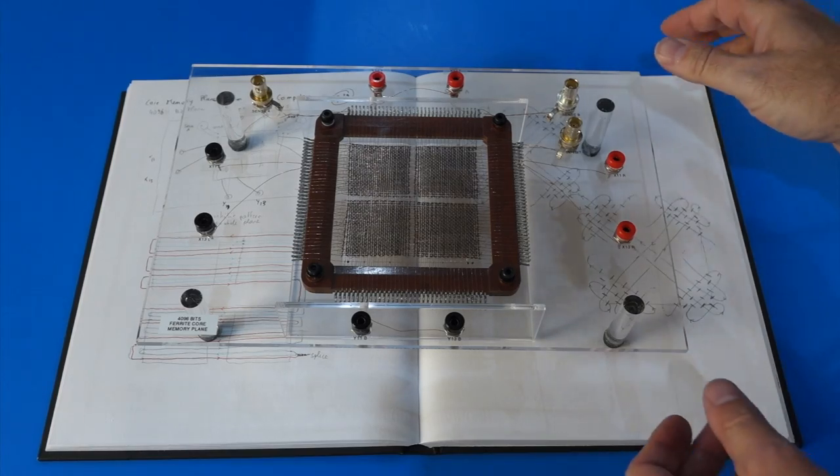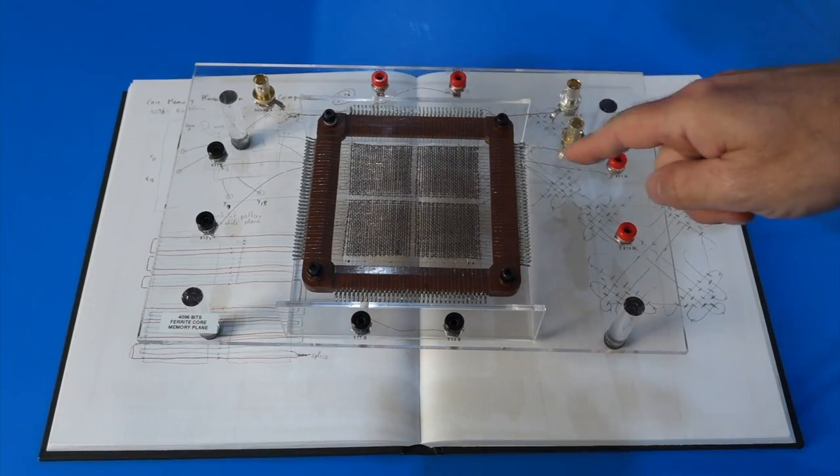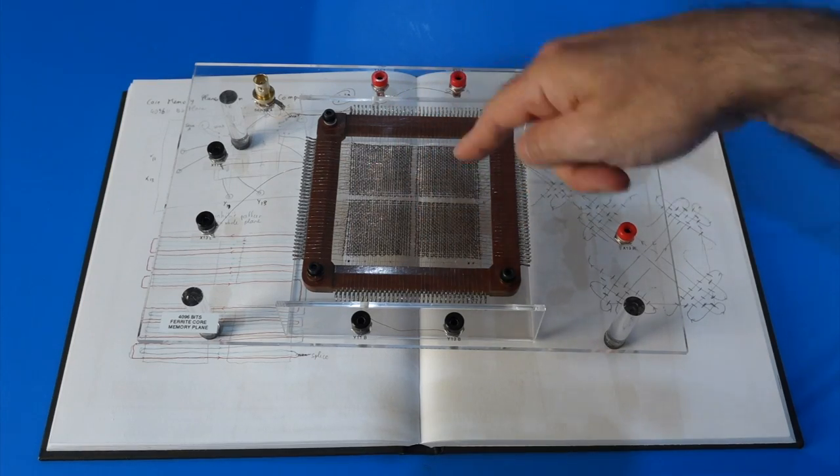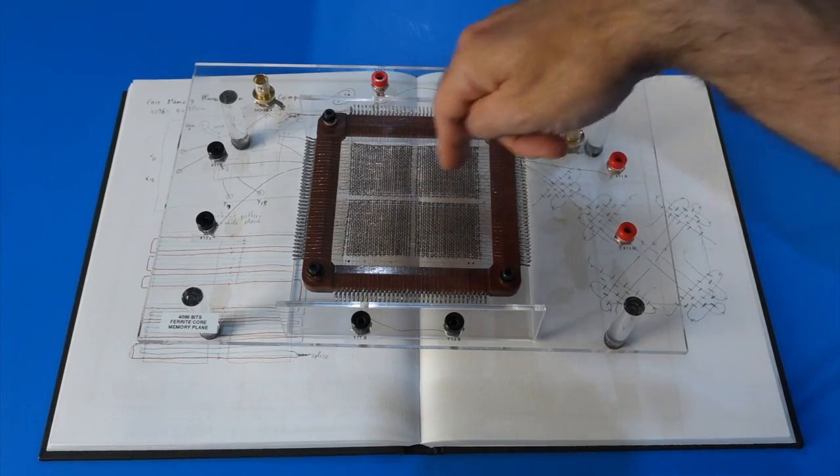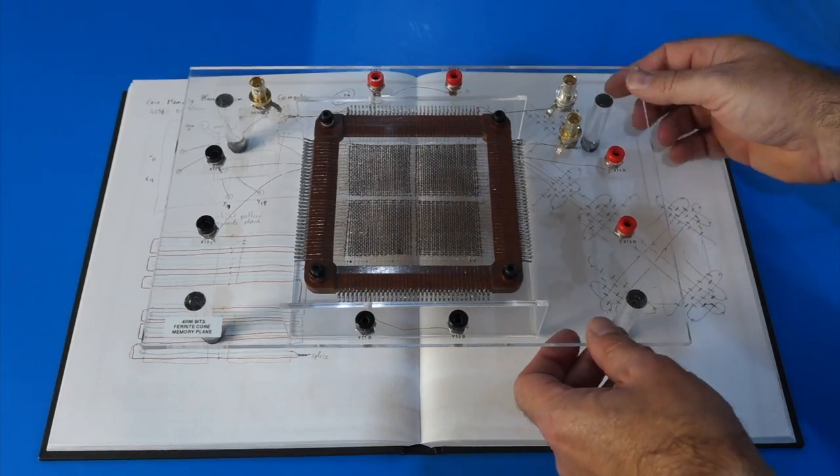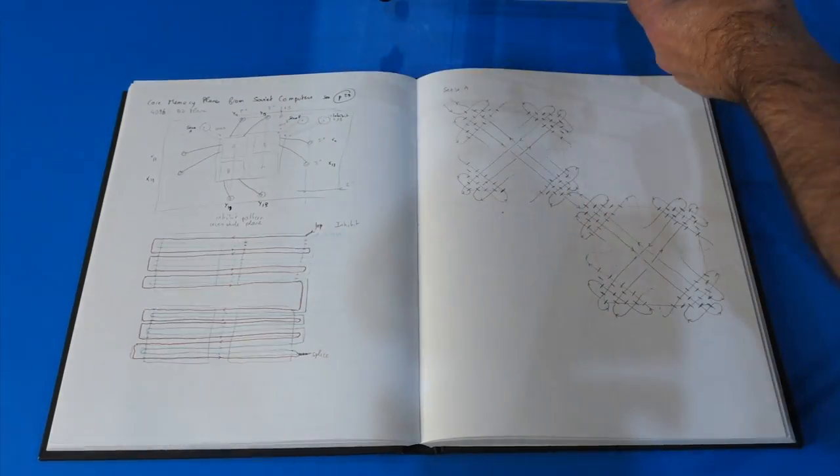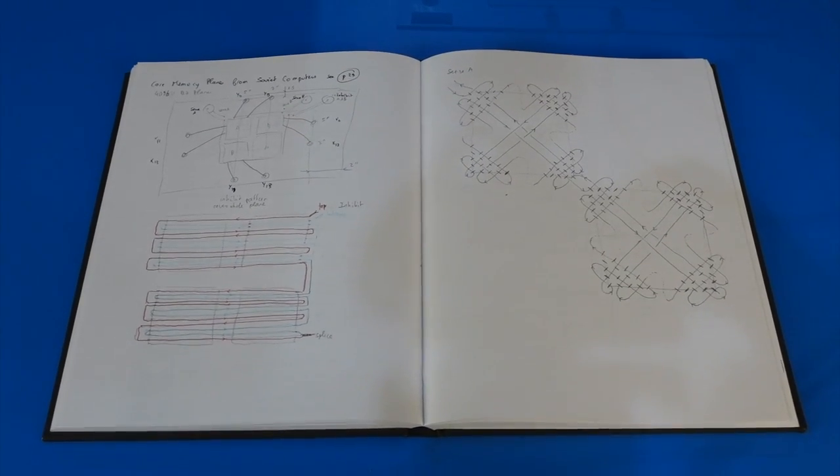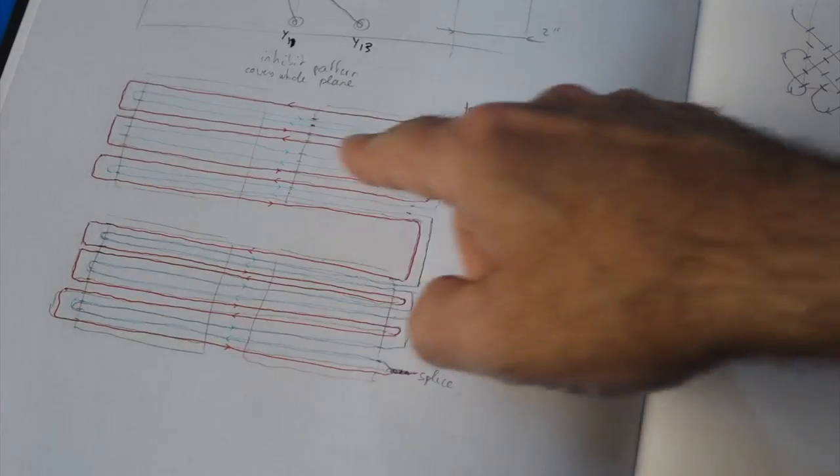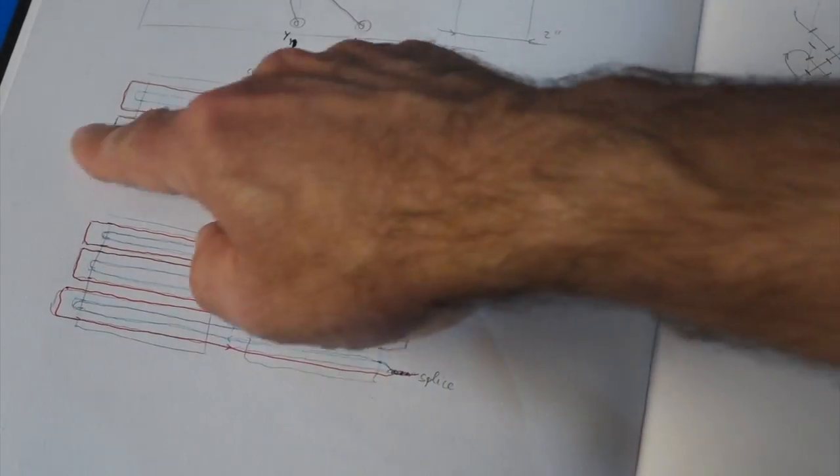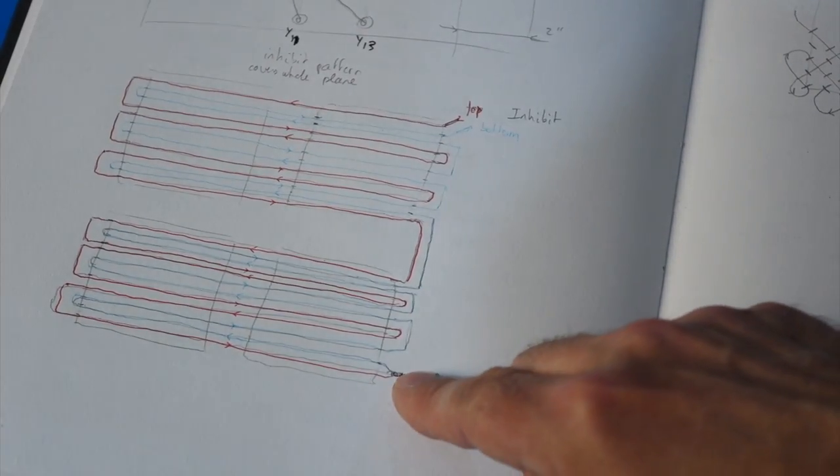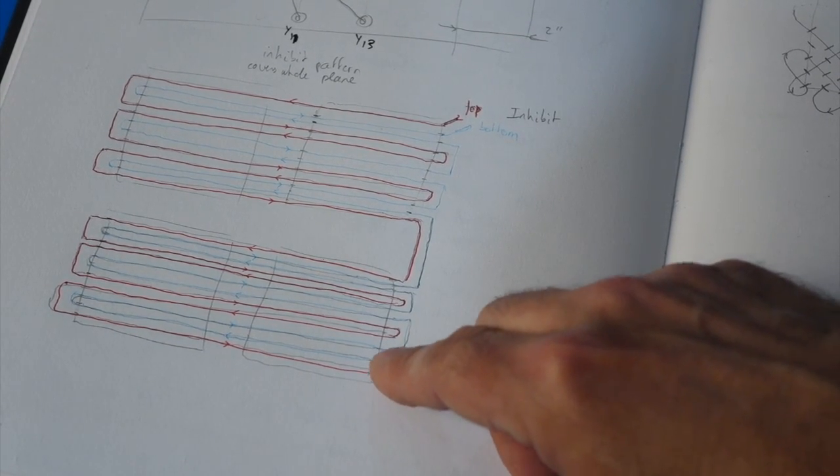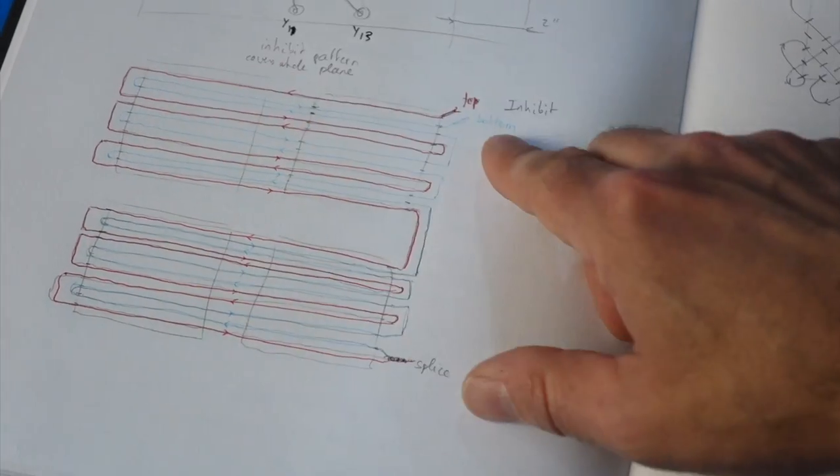So the first thing I had to do is figure out what weave pattern was used. In this one, there are four sub-patterns, four sub-arrays of 1K each. And the X and Y pattern runs pretty much through all the four sub-arrays. And I had to figure out what the inhibit and sense wires do. And the inhibit is pretty straightforward, snakes around. There's first one wire that I put in red, that goes through half of the cores. And then there's a little splice at the end, which you can see, and then it comes to the blue wire and comes back here.